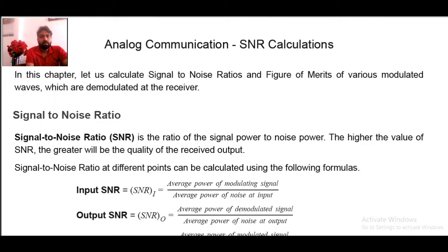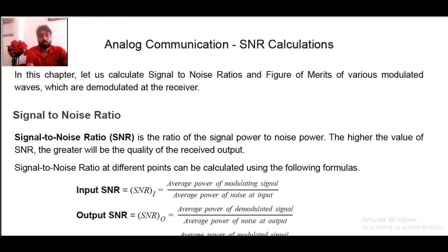Welcome. Today we have a topic related to noise in analog communication systems. As discussed in our previous lecture about noise and its importance, it is necessary to take care about noise in a communication system. The most important figure to consider while talking about communication between two systems is SNR. This SNR is called signal to noise ratio, and its calculation is extremely crucial. Before having a proper SNR value of a medium or channel, it is not suggested to start a communication.